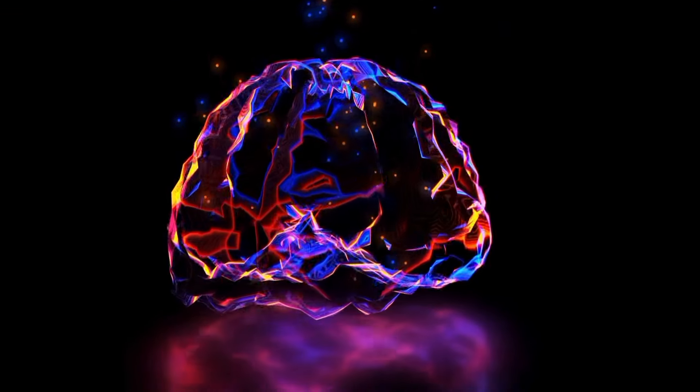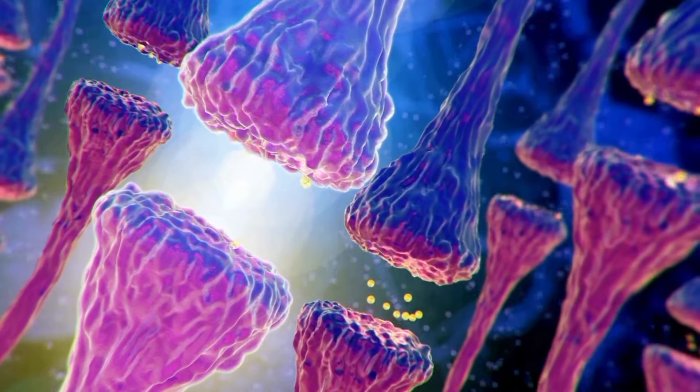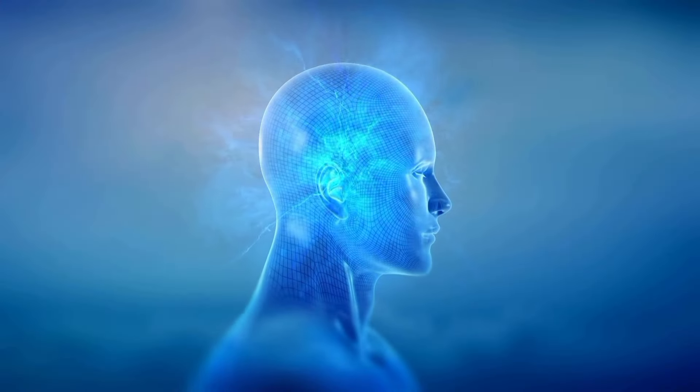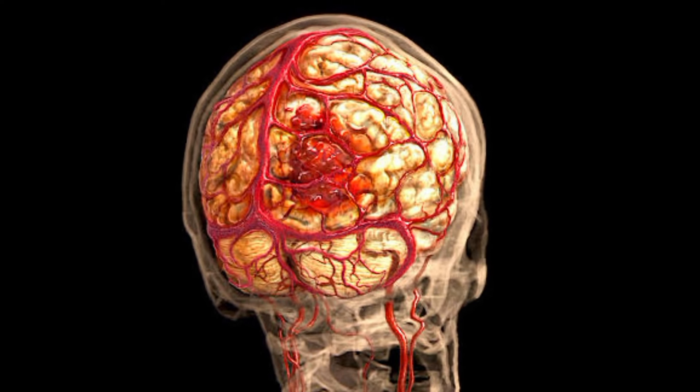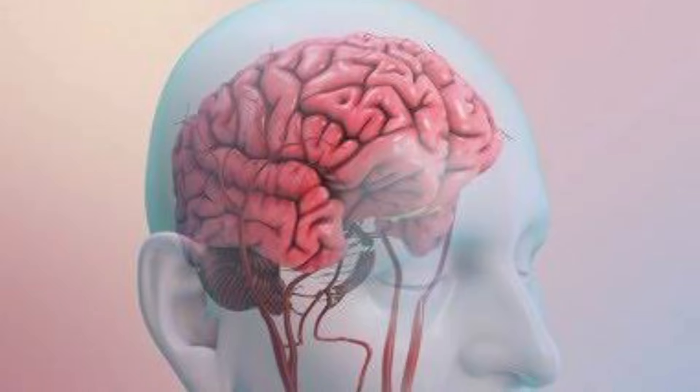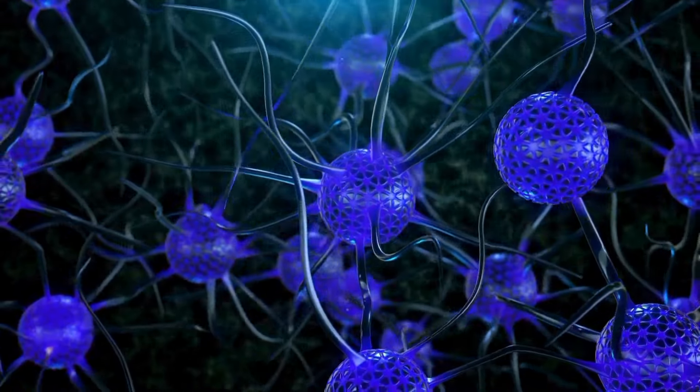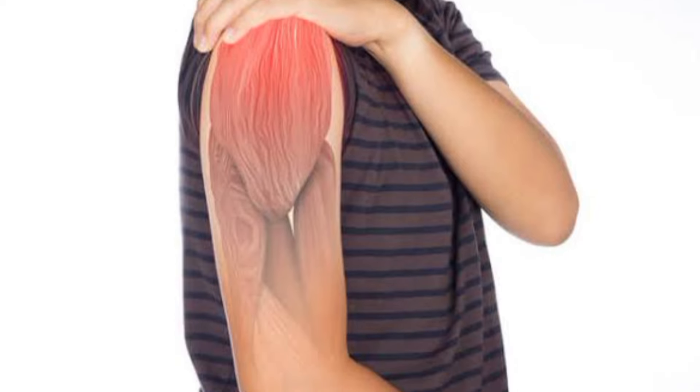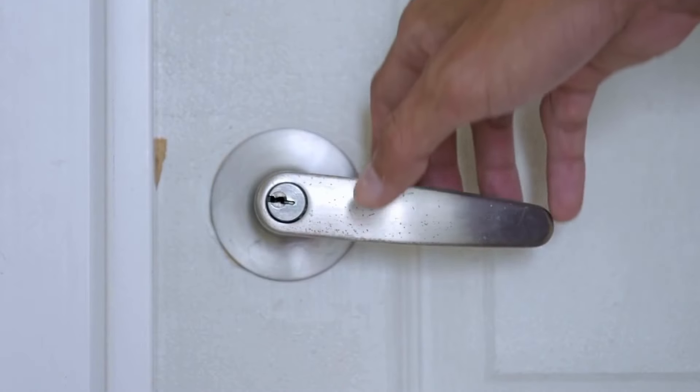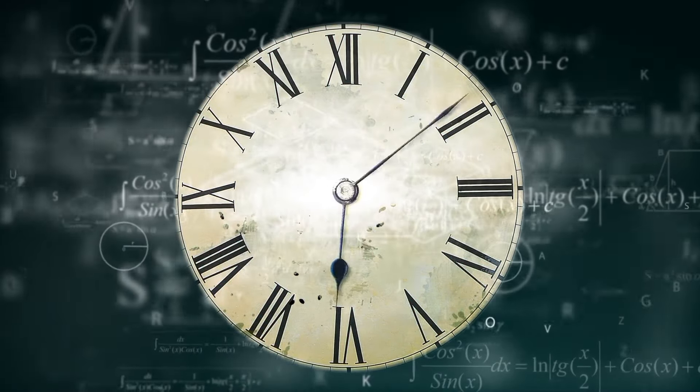What is meant by FAST acronym? The FAST acronym is a powerful and easy-to-remember tool for recognizing the signs of a stroke and acting quickly. It not only highlights the key symptoms to watch for, but also emphasizes the importance of timely intervention. F prompts us to check for facial drooping, where one side of the face may sag or feel numb, indicating potential nerve damage. A directs attention to arm weakness, urging us to assess whether both arms can be raised evenly or if there is difficulty gripping objects. Lastly,